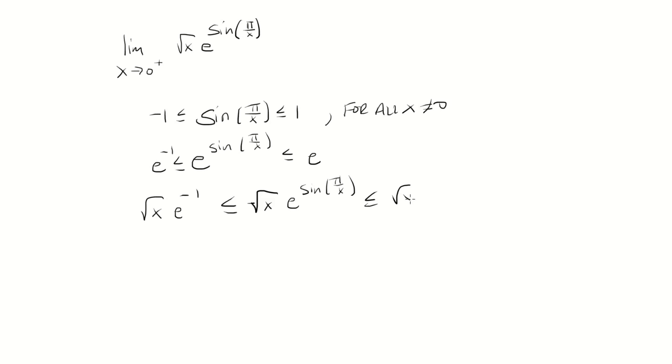So then square root of x e sine pi over x is bounded between the square root of x times e to the negative 1 and e times square root of x.